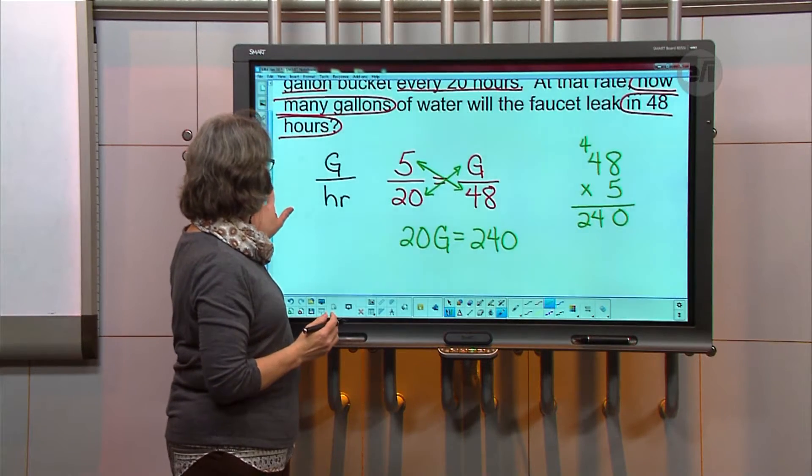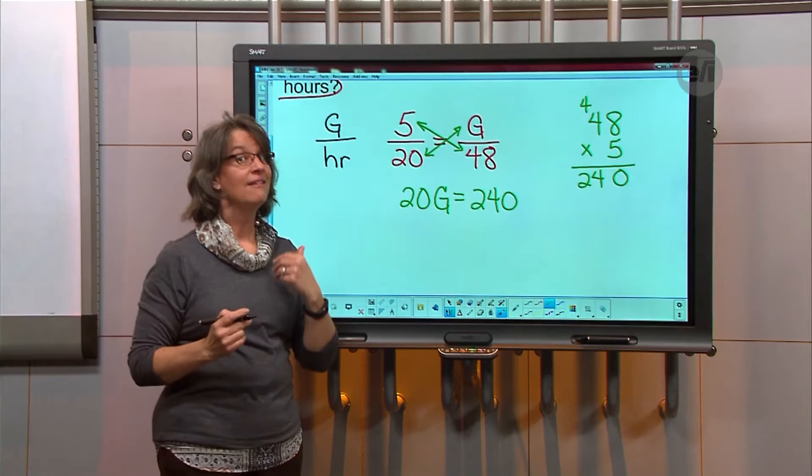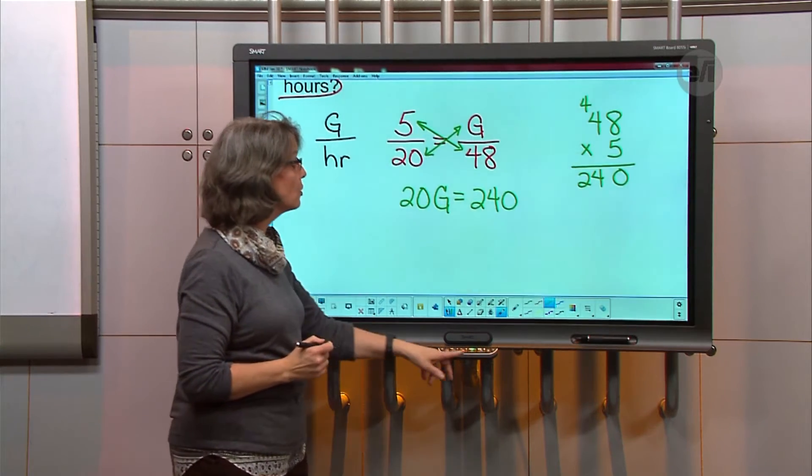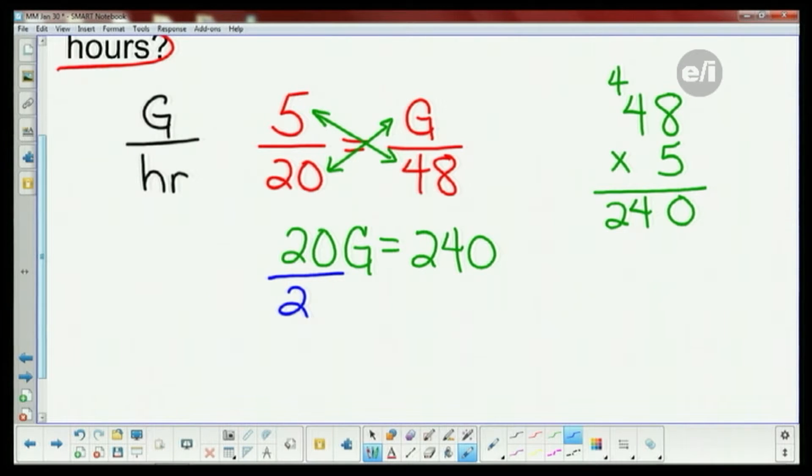So now I'm going to put 240 on the other side. Now you have a one step equation and what you need to do is find what 1G is, not 20 of them. So we're going to divide by that 20, because 20 divided by 20 gives me one whole. Remember what you do on one side of an equation you have to do to the other, so we're going to do it over here as well.